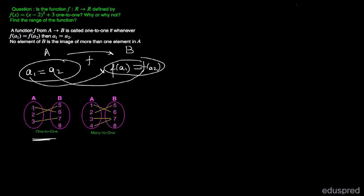You can see that 1 is associated with 6, 2 is mapped to 5, and 3 is mapped to 7. So every element in the domain has a unique image, and note that it is okay if any element in the range is left unmapped.